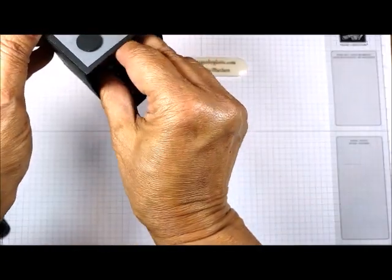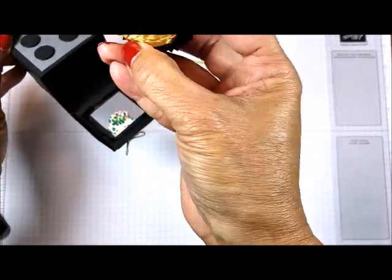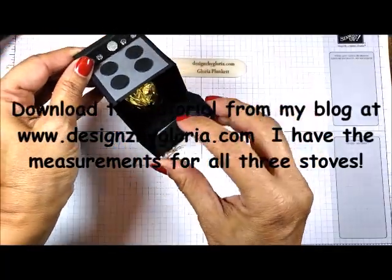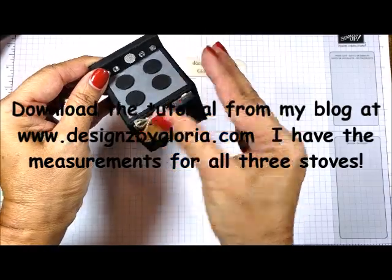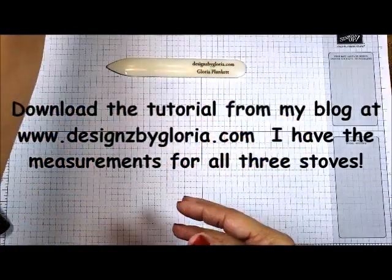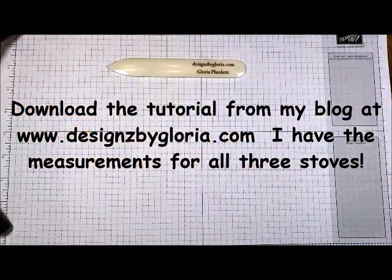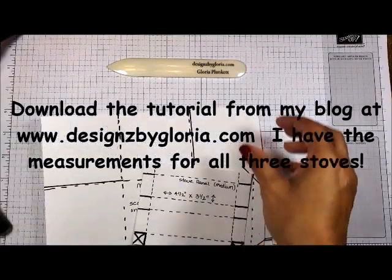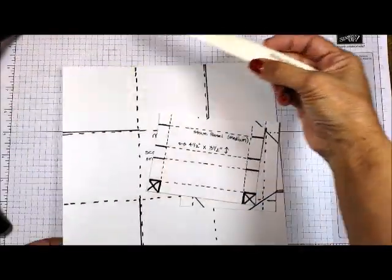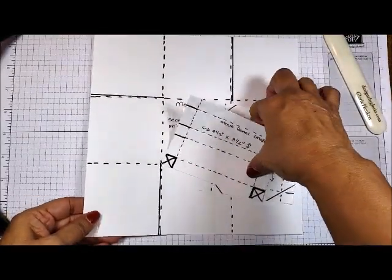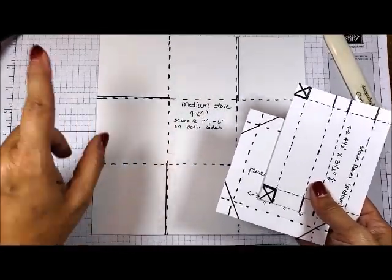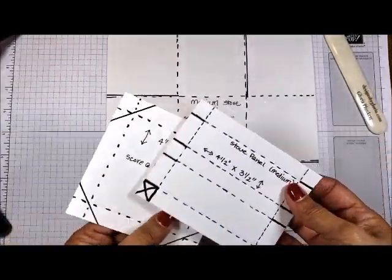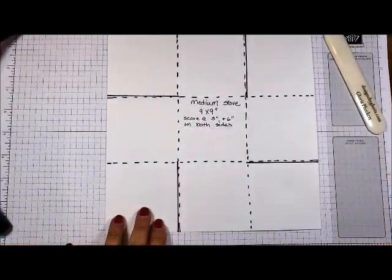And I also created this little cutie patootie—isn't that adorable? This one will easily hold a Ferrero Rocher candy. This is the one I'm going to show you because it's easier to keep this in my camera view for you. What I've done is I've created a tutorial that you can download from my blog at DesignsByGloria.com and I have the instructions to create all three of these little stove treat boxes, so there's no need to write down dimensions.